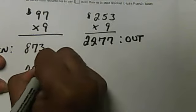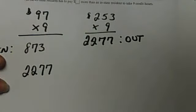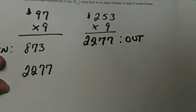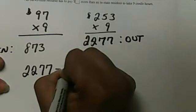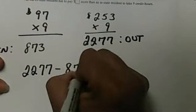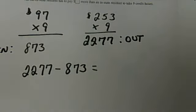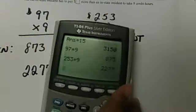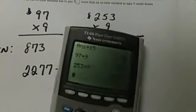So the out-of-state resident will pay $2,277, and that'll be minus the in-state resident will pay $873. When you subtract those two, minus that $873...